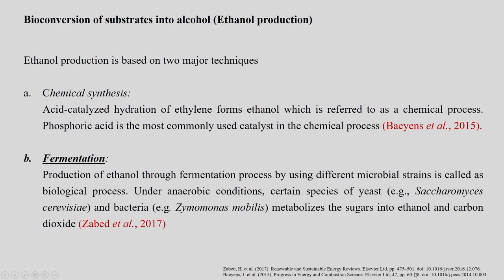Ethanol production is based on two major processes or techniques. The first one is the chemical process and the other one is fermentation. The chemical process is mainly carried out using acid as a catalyst.